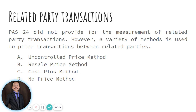The resale price method is often used where goods are transferred between related parties before a sale to an independent party is made. This method reduces the resale price by a margin representing an amount from which the reseller would seek to recover costs and make an appropriate profit. Under resale price method, a margin is given to a related party to cover the costs they incurred in buying that particular goods, meaning there is a bit of flexibility in terms of pricing.